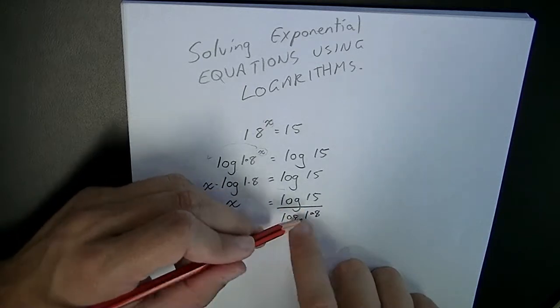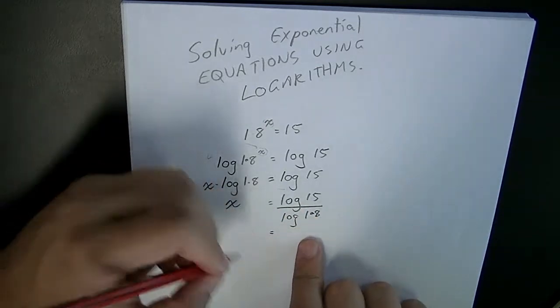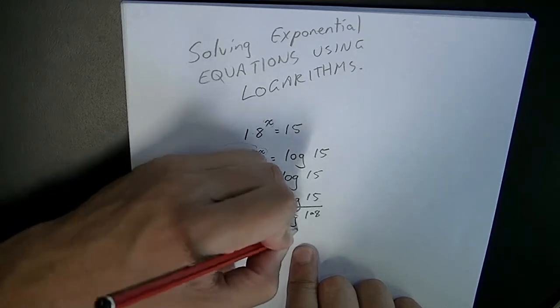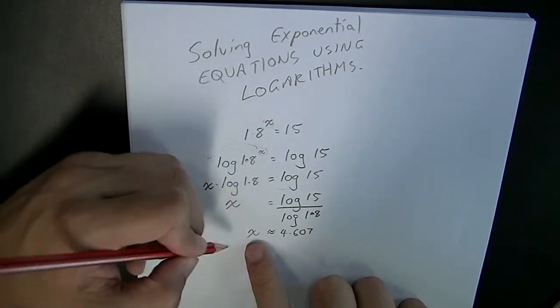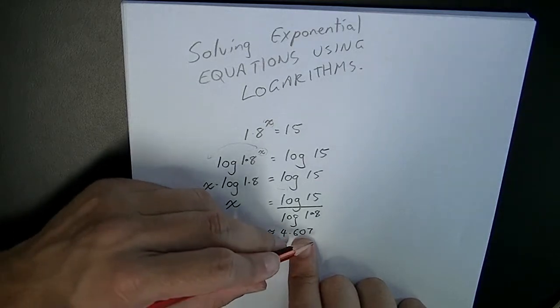Log 15 over log 1.8 will give you an answer of approximately 4.607. So x is approximately equal to 4.607.